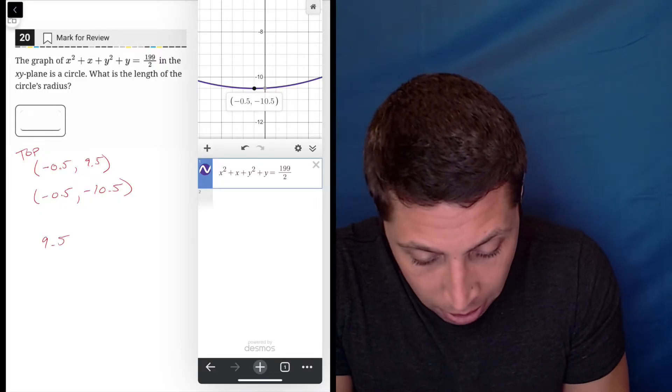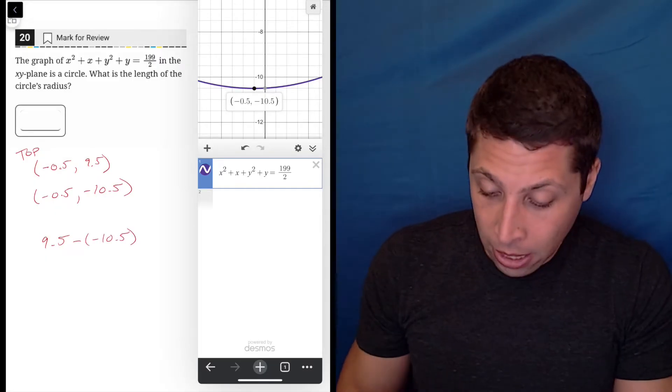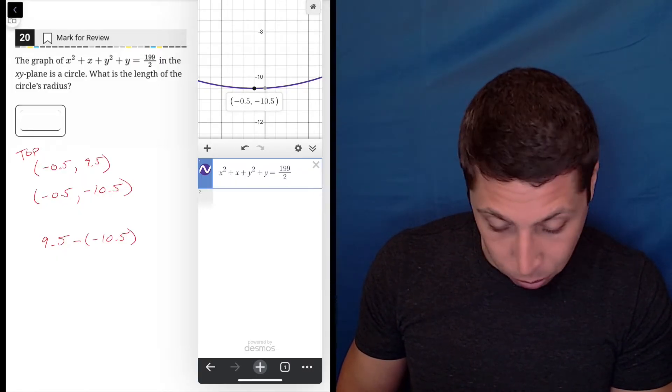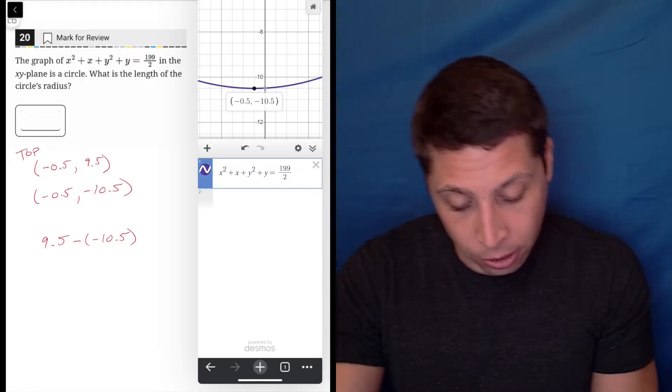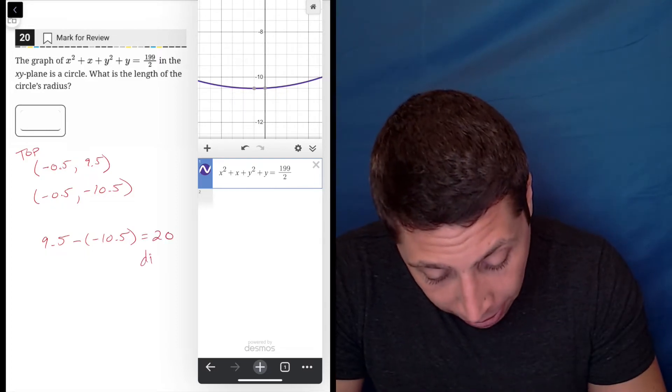So I'm really just going to take the difference between the 9.5 and the negative 10.5. So just do a little subtraction, 9.5 minus negative 10.5. Don't forget the double negative. And I guess I can figure this out without the calculator, but might as well. That's 20. Now that's the diameter. Diameter is 20.